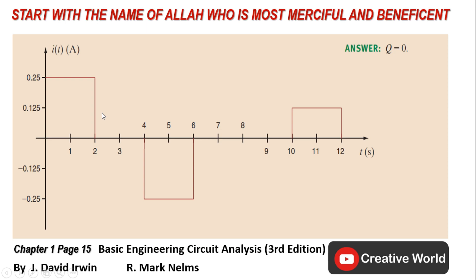The answer given in the textbook for the current sketch is wrong. For justification, we have 0.2 ampere current for 2 seconds and minus 0.25 ampere current for 2 seconds. If we add the total current for the time interval 0 to 12 seconds, this current will nullify — it is 0.25 ampere for 2 seconds and also 0.25 ampere for 2 seconds.